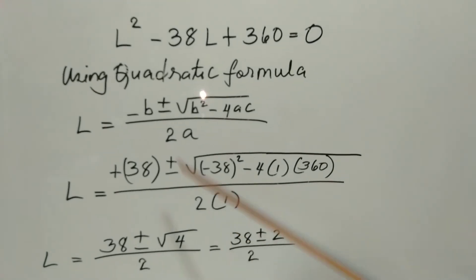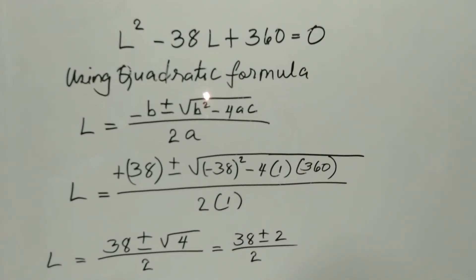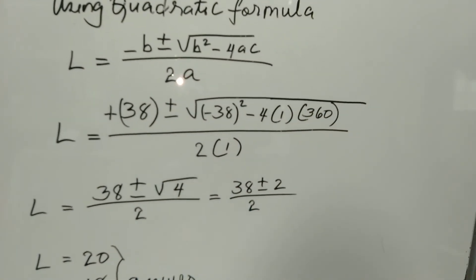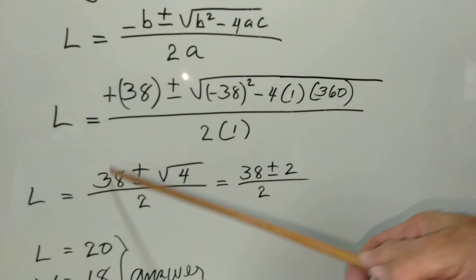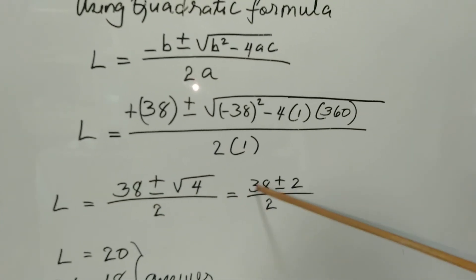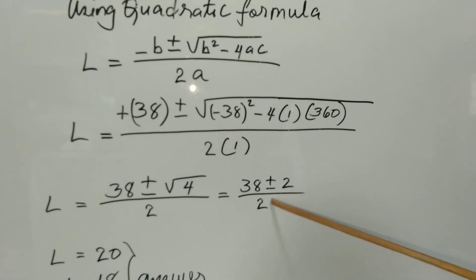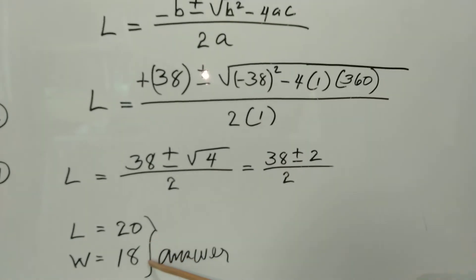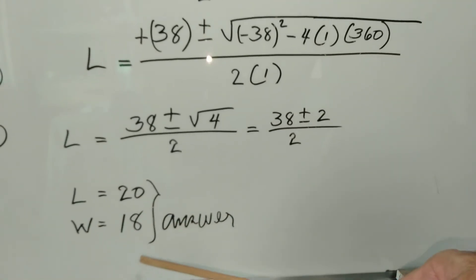Over 2 times 1. To simplify this equation, we have 38 plus or minus square root of 4 over 2, so 38 plus or minus 2 over 2. So we get the value of L will be 20, and the value of W will be 18.